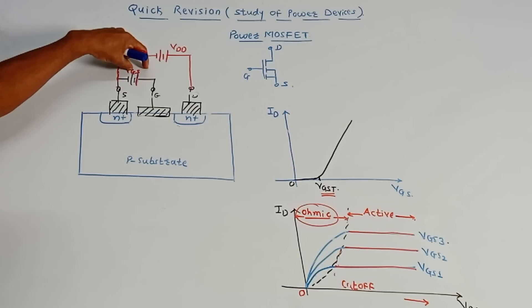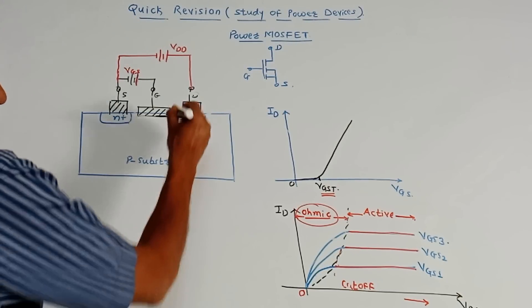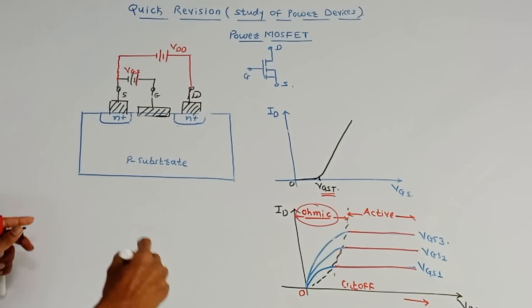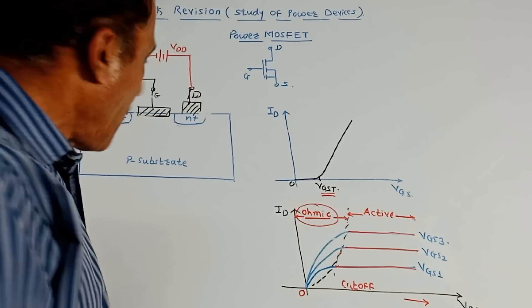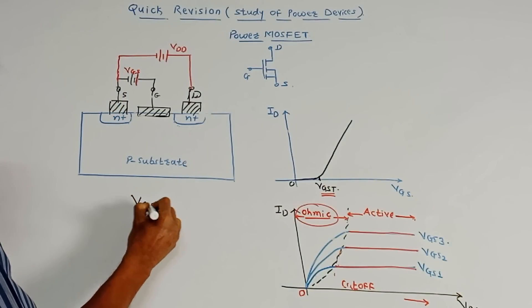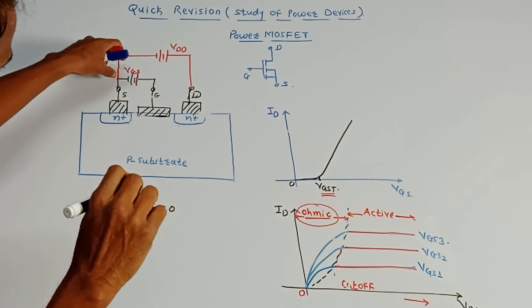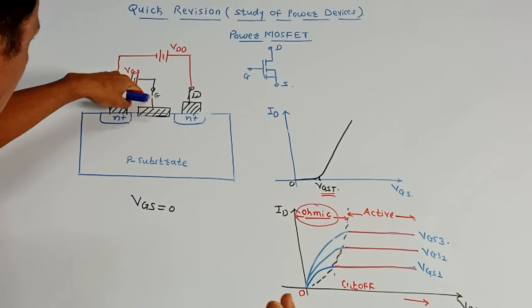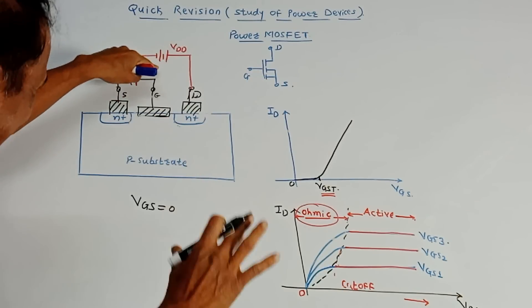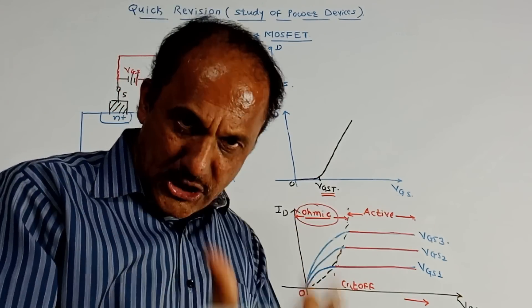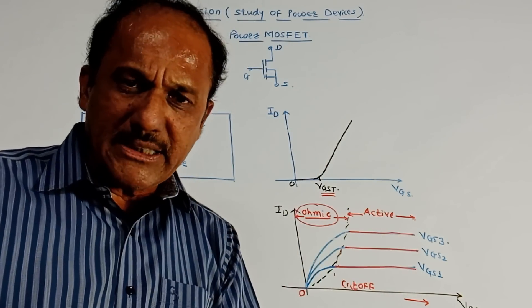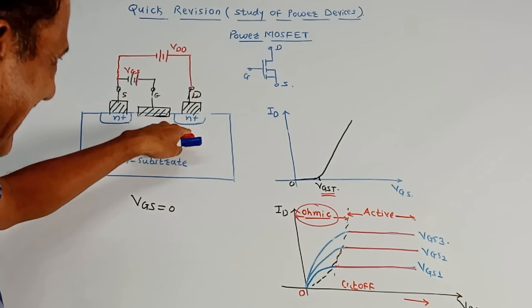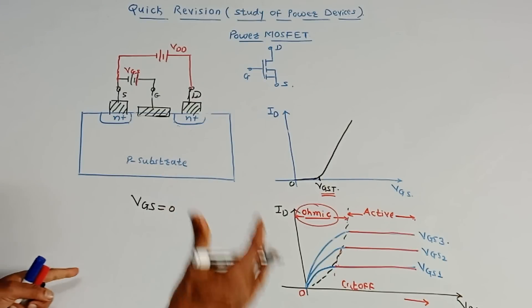VGS is applied between the gate and source, and VDD is applied between the drain and source. When VGS equals zero — meaning no gate voltage is applied — the device will not conduct, because a channel must form between source and drain for conduction. With VGS at zero, there is no channel and therefore no conduction.